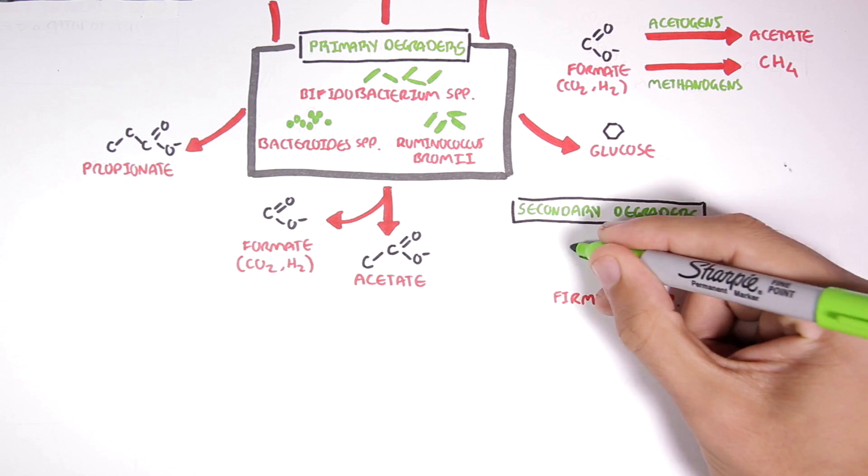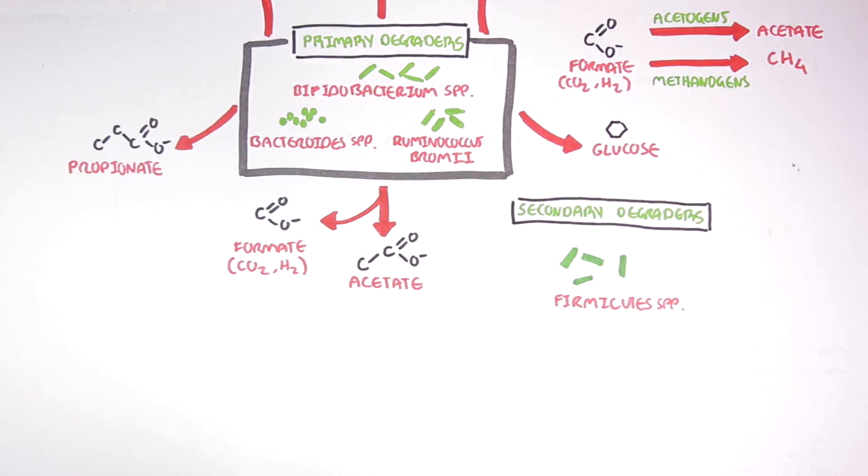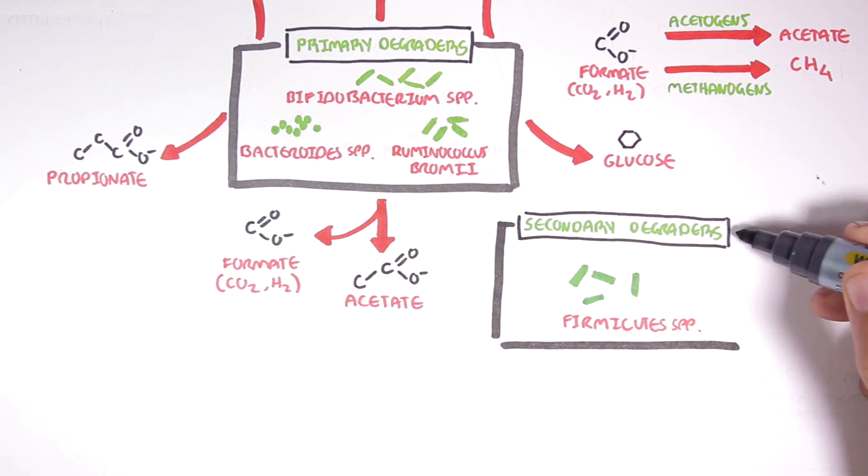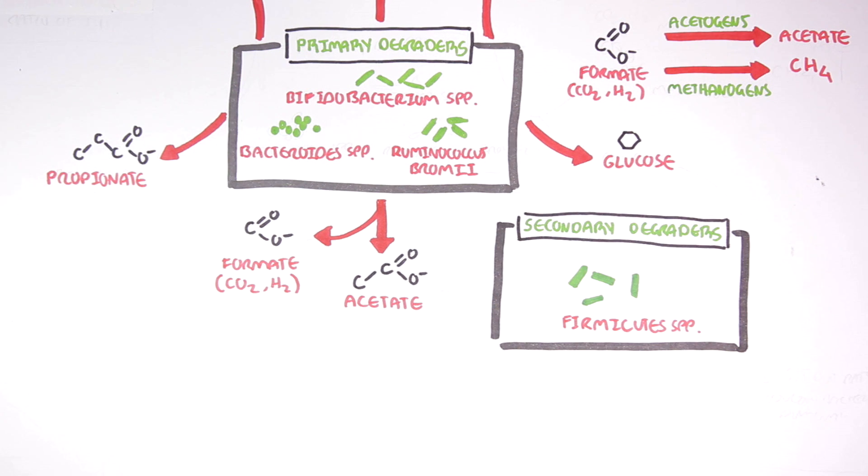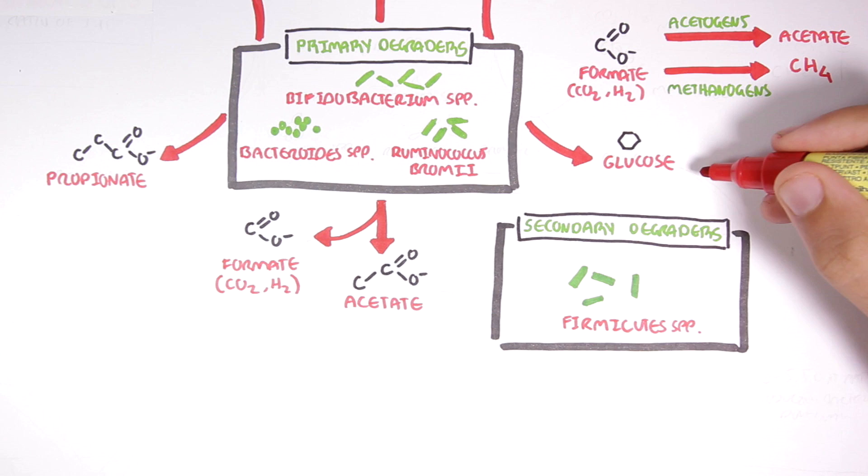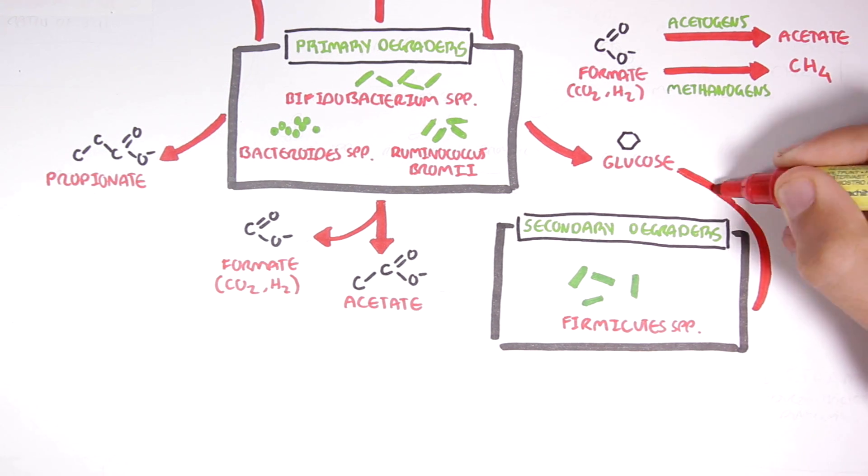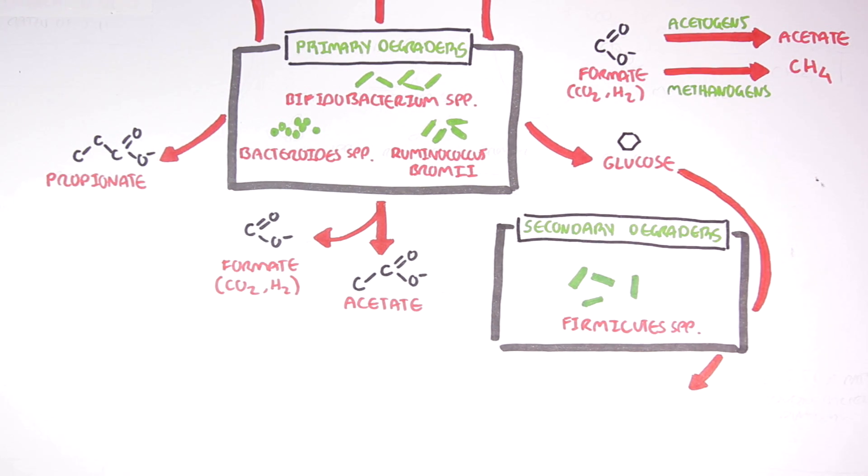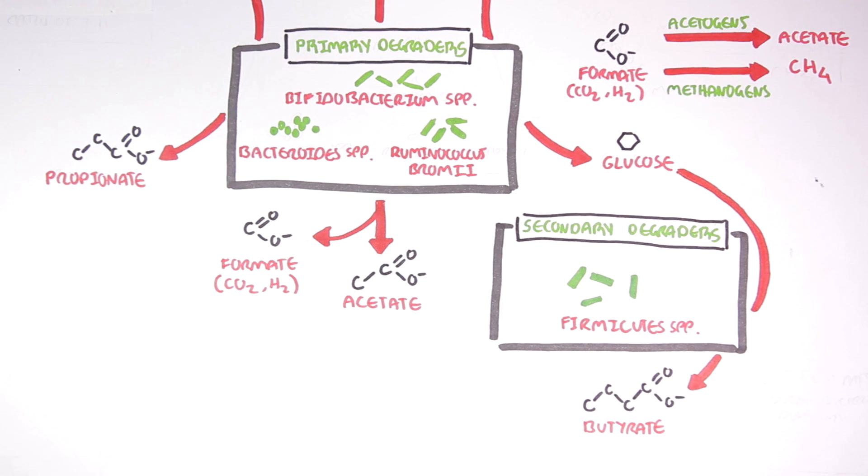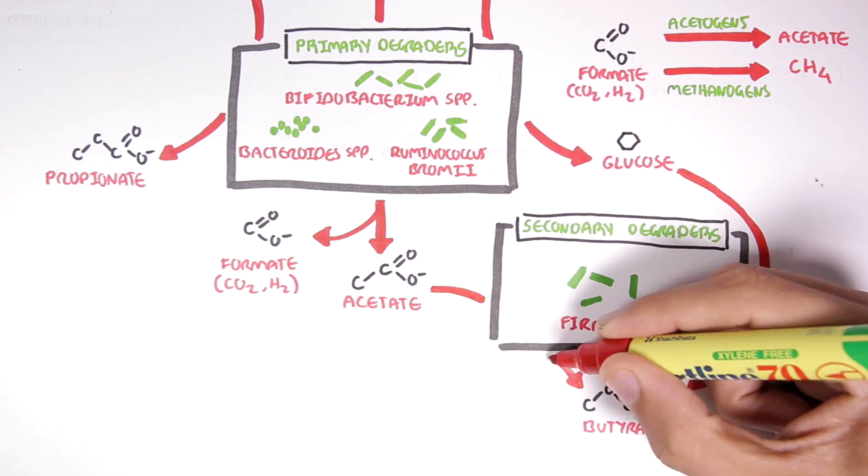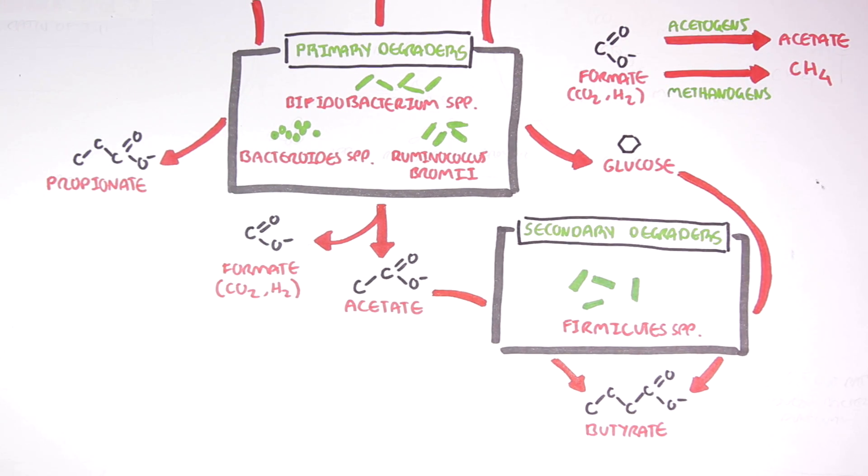the secondary degraders, such as the firmicute species, rely on the primary degraders to release glucose monomers. The firmicute species can utilize the glucose and ferment it to produce a four-carbon short-chain fatty acid called butyrate. Some of the secondary degraders can also utilize acetate to produce butyrate as an end product.